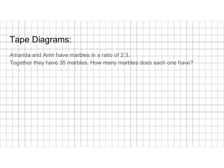So we're going to be working with tape diagrams. Let's take an example problem: Amanda and Amir have marbles in a ratio of two to three, and together they have 35 marbles. How many marbles does each one have? We're not saying Amanda has two marbles and Amir has three — just that for every two Amanda has, Amir has three. We could guess and check, but we're going to show a more precise way.